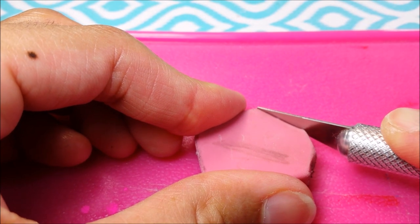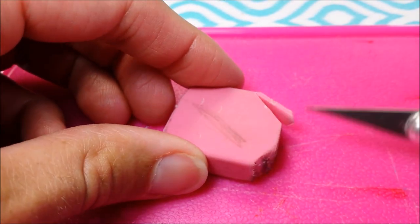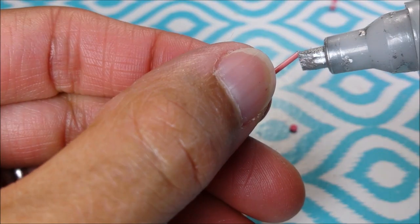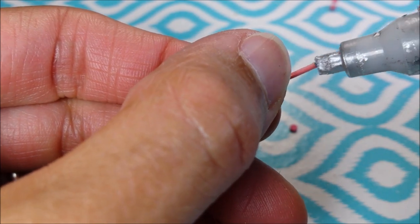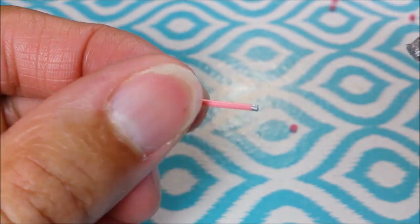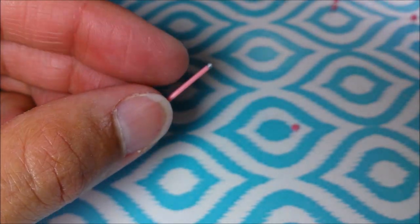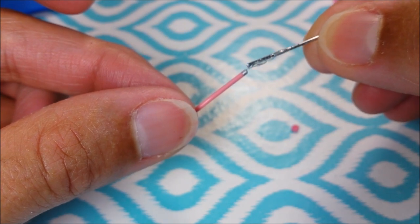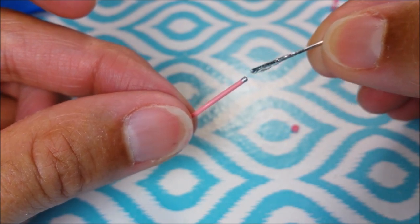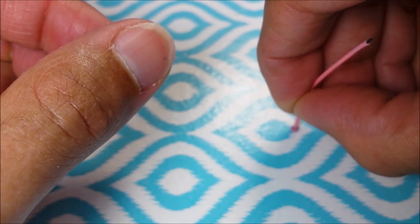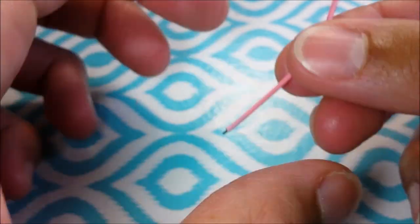Then using silver paint, I paint them. I apply some super glue and attach my eraser.